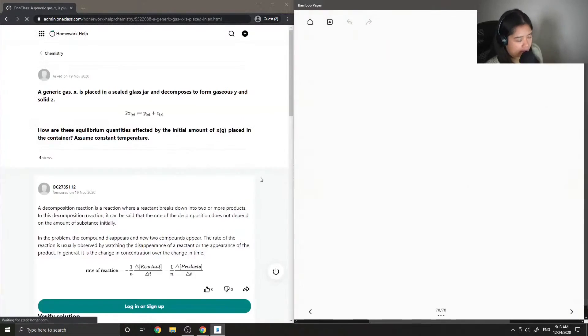Okay, so on to question 6. A generic gas X is placed in a sealed glass jar and decomposes to form gaseous Y and solid Z in the following reaction.